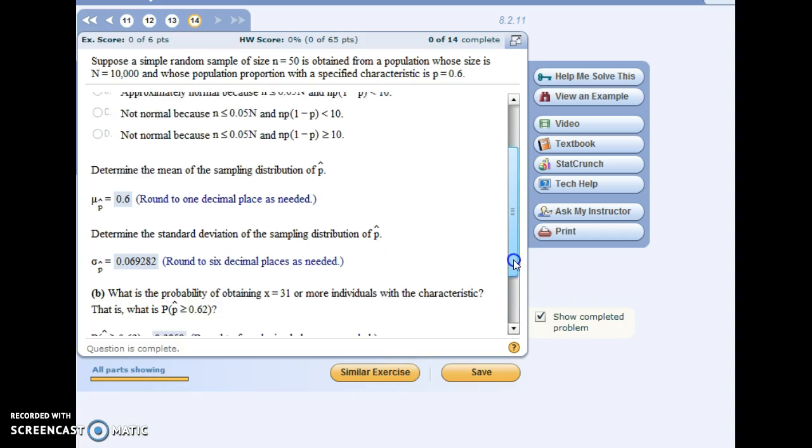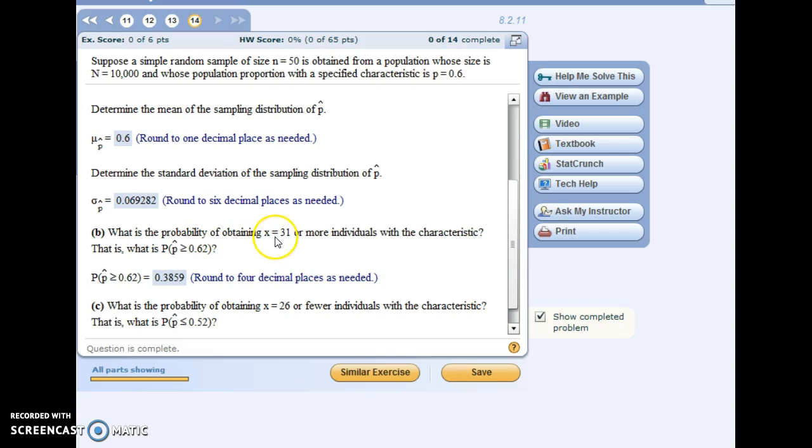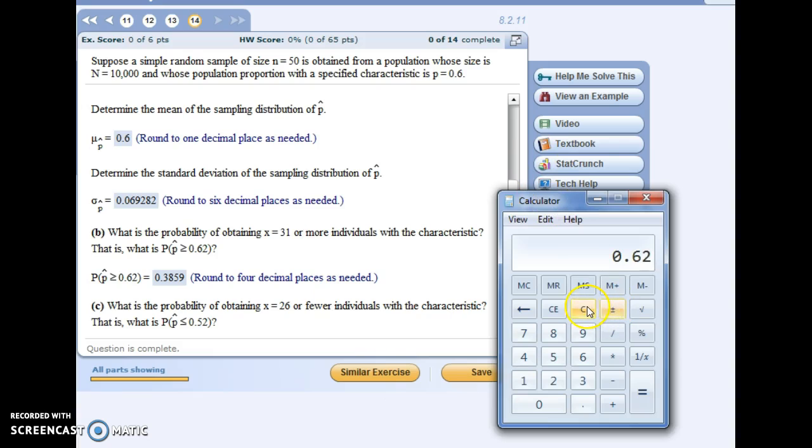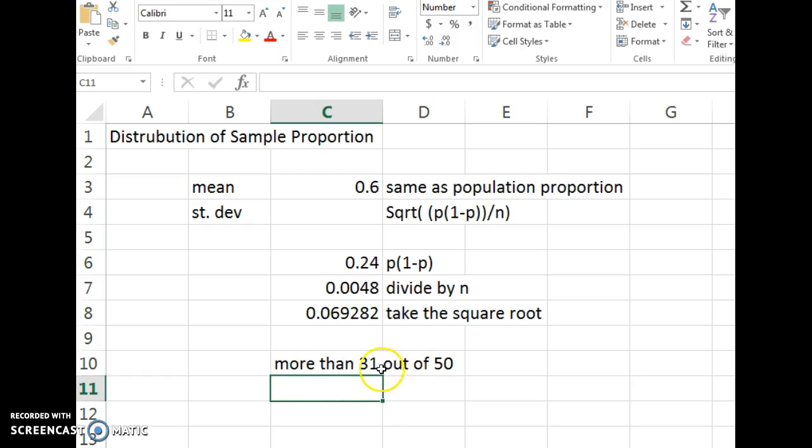And then the last part of the problem says, what's the probability of obtaining x equals 31 or more individuals with the characteristic? And so think about it. If you have a sample of size 50 and 31 people in that sample have a certain characteristic, 31 out of 50 would be 62%. So we're asking, what's the chances that our sample has 62% or more people with the characteristic if, in fact, the population only has 60% of people with the characteristic? So let's jump into Excel. We can use the fact that our sampling distribution is approximately normal.